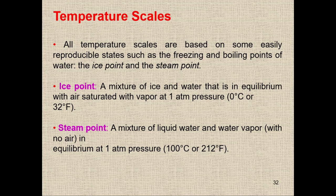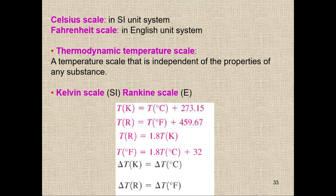In the SI unit system we have the Celsius scale, and in the English unit system we have the Fahrenheit scale. A thermodynamic temperature scale is one that is independent of the properties of any substance. We have two thermodynamic temperature scales: Kelvin in SI and Rankine in the English unit system. The conversion is: K = °C + 273.15, and R = °F + 459.67.